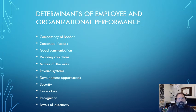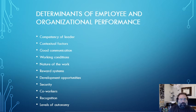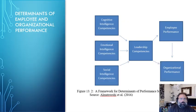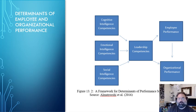Determinants of employee and organizational performance include: competency of leader, contextual factors, good communication, working conditions, nature of the work, reward systems, development opportunities, security, co-workers, recognition, and levels of autonomy. Looking at these from a more visual representation, cognitive intelligence competencies, emotional intelligence competencies, and social intelligence competencies lead towards leadership competencies, which impact employee performance and thereby help organizational performance.